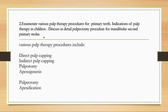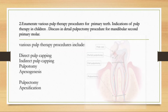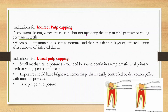Various pulp therapy procedures for primary teeth include: direct pulp capping, indirect pulp capping, pulpitomy, apexogenesis, pulpectomy, and apexification. The first four techniques allow retaining pulp vitality with possibility of rebuilding structures, meaning formation of the remaining root or vital dentine. Pulpectomy and apexification are mostly done on non-vital teeth. Indications of indirect pulp capping: deep caries close to but not involving the pulp in vital primary or young permanent teeth, where pulp inflammation is nominal and a definite layer of affected dentine remains after removal of infected dentine.